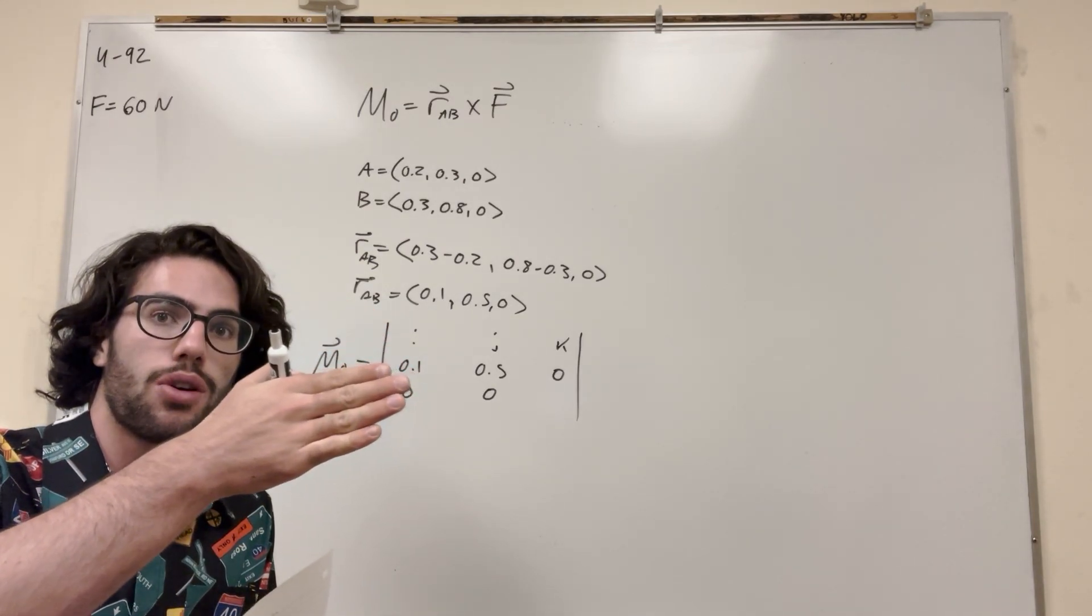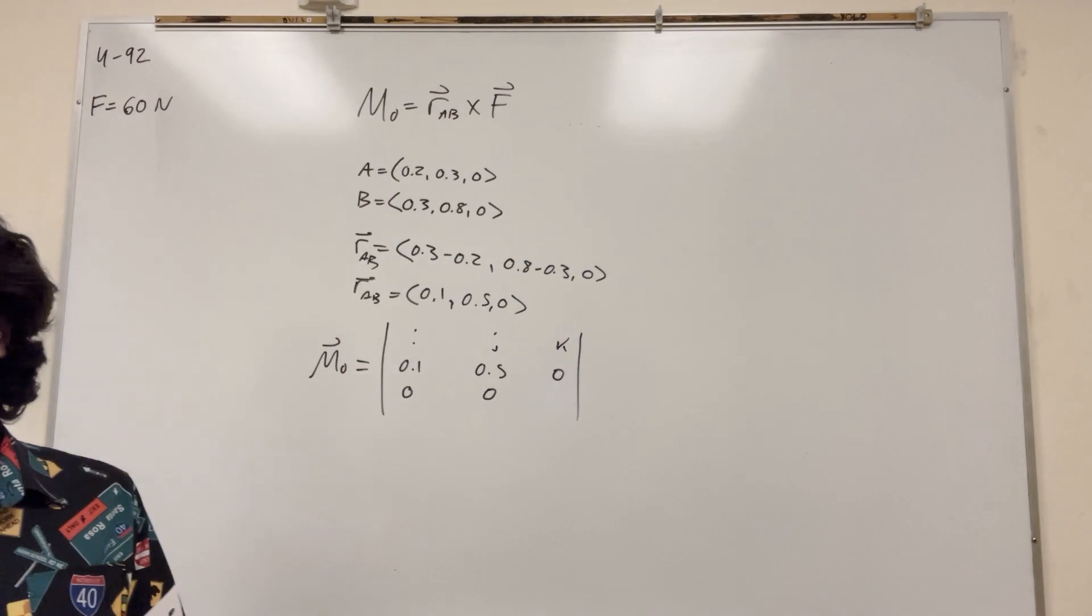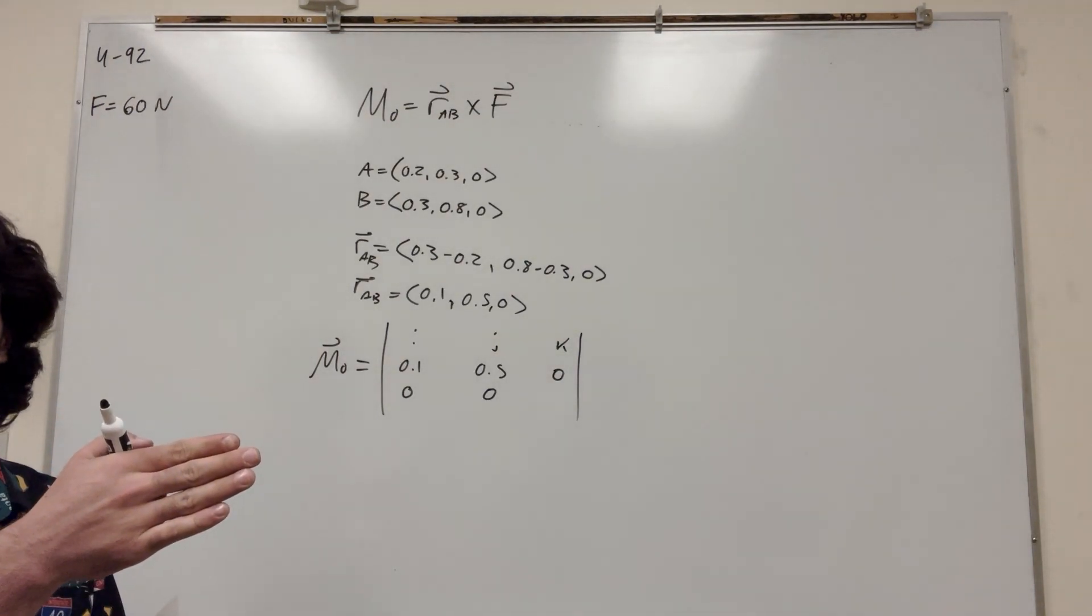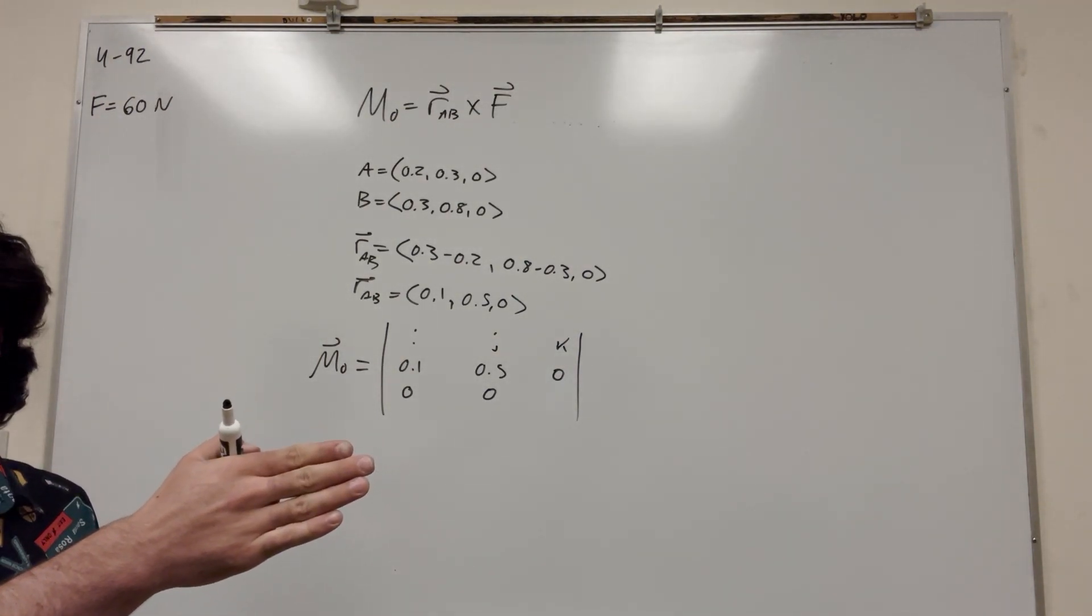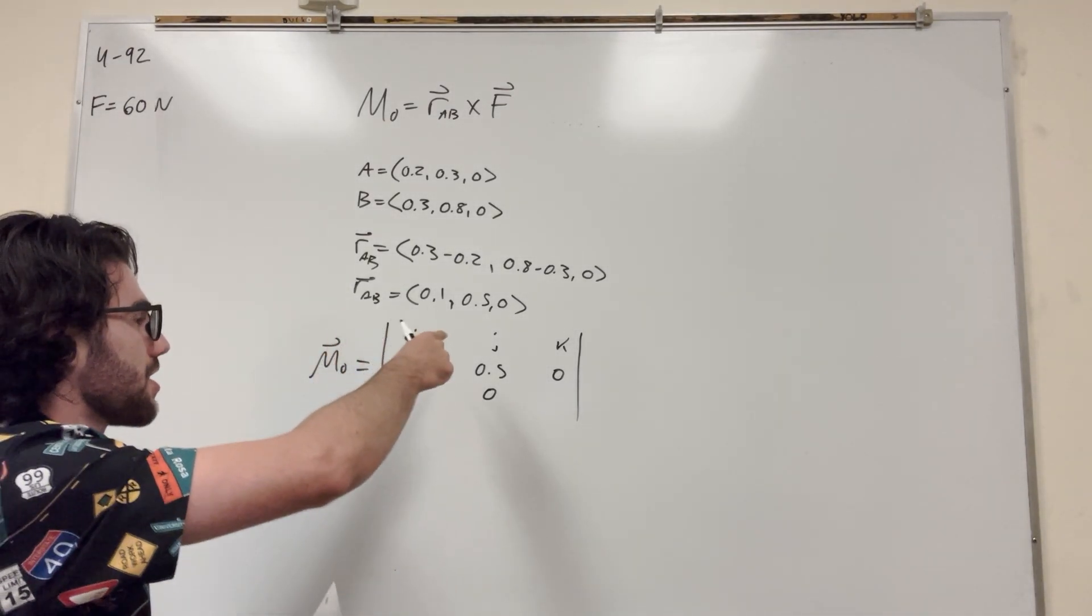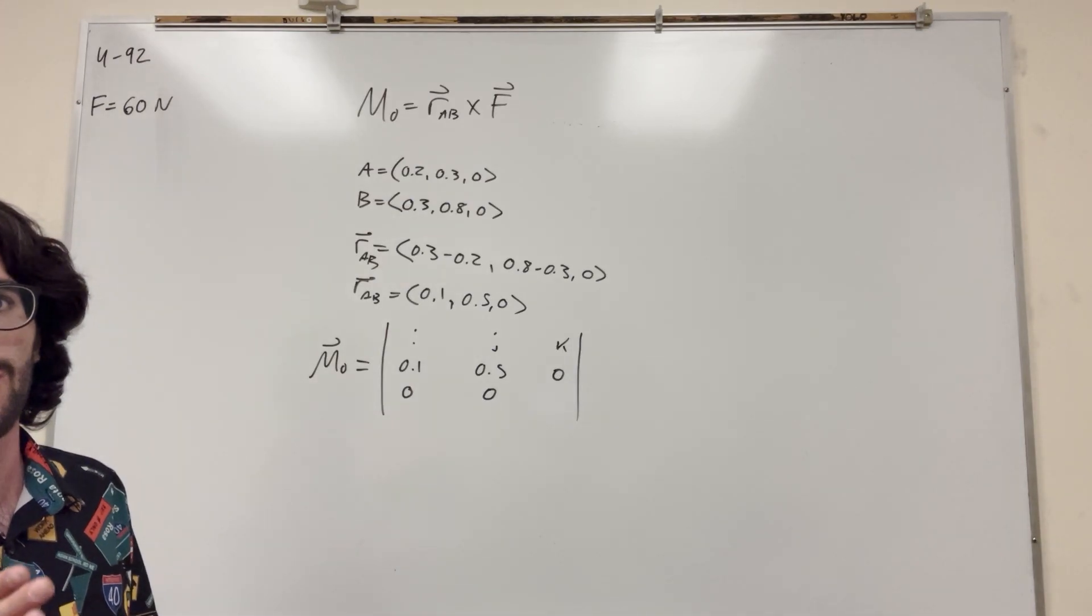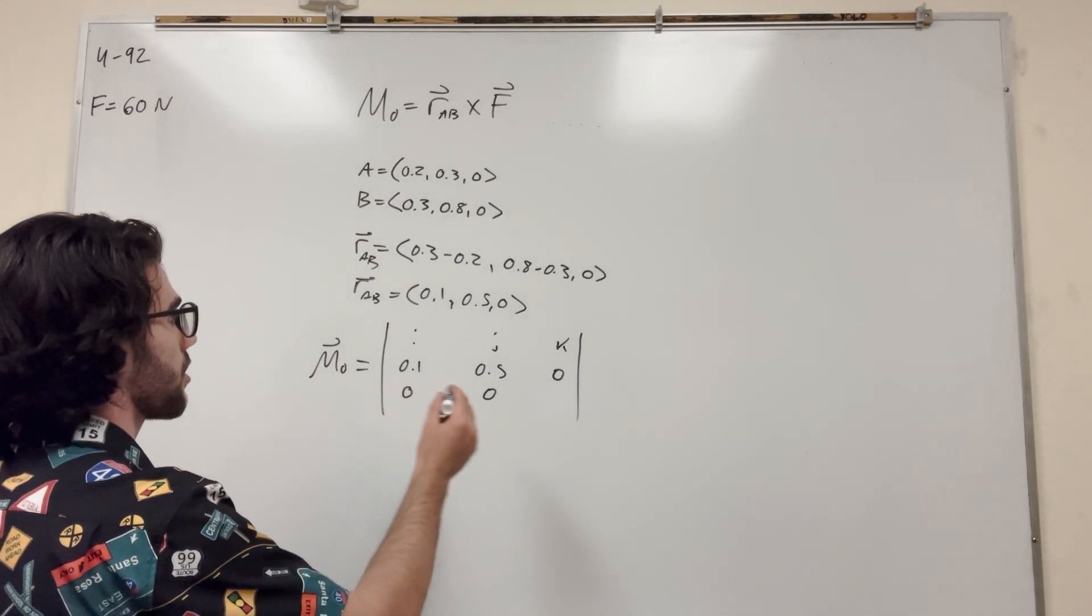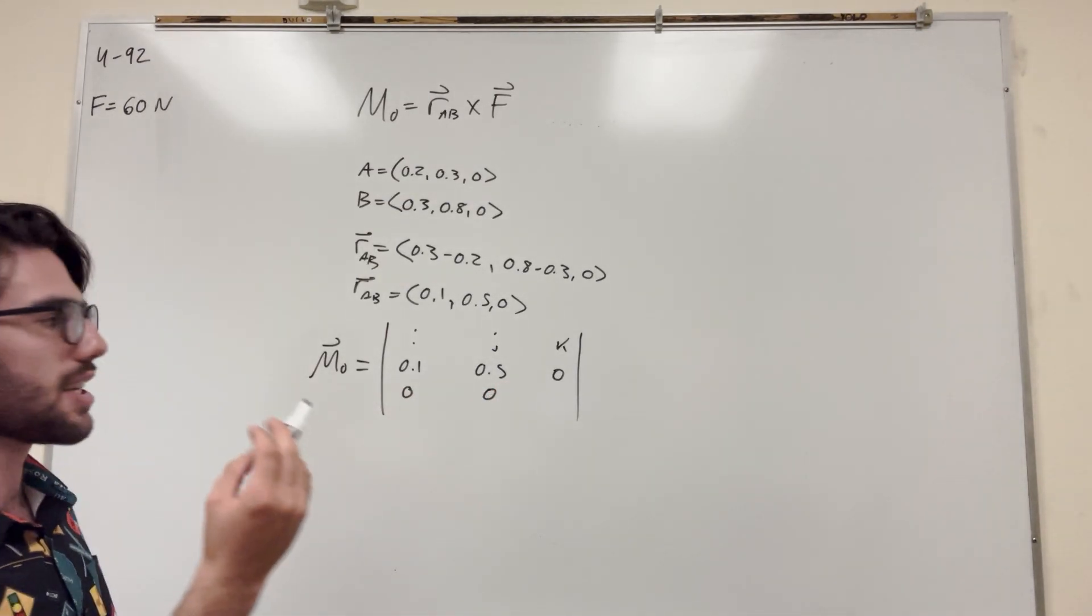So in this case, we're making it pointing towards the positive force. It points towards the positive force. So because it's pointing towards the positive force, this position vector we just made, we're going to have to take that positive force to be our force vector. So that vector is 0, 0, and it goes positive 60 in the Z.